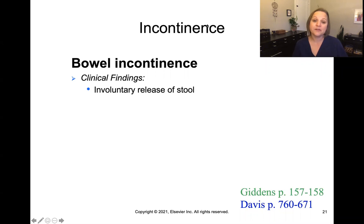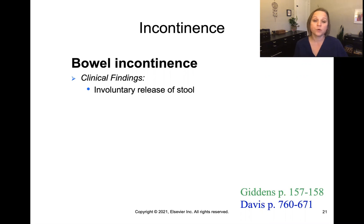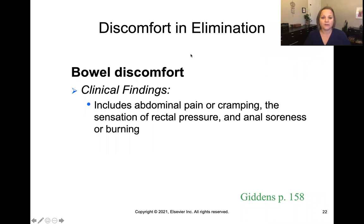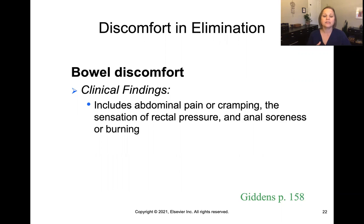Bowel incontinence is the involuntary release of stool. We have an external sphincter that we can consciously control, but when patients lack the ability to control that sphincter, they'll have an involuntary release of stool — fecal incontinence. The final finding we can see is discomfort: abdominal pain or cramping, sometimes intermittent, the sensation of rectal pressure if there's a lot of stool in the rectum, and anal soreness or burning from straining and micro-tears or fissures at the anus from the tissue stretching to accommodate the large amount of stool.